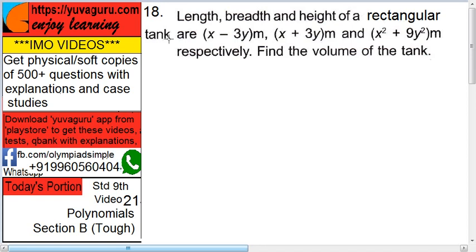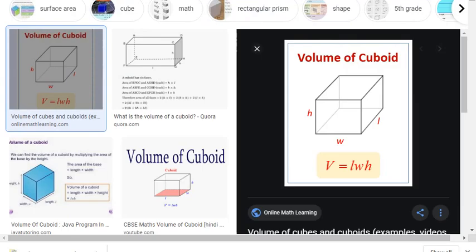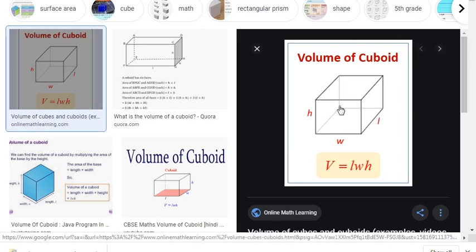Length, breadth and height of a rectangular tank are x minus 3y meters, x plus 3y meters, and x square plus 9y square meters respectively. Find the volume of the tank. To find the volume of a cuboid or rectangular tank...